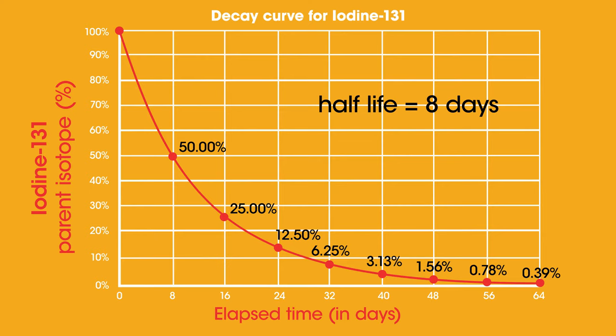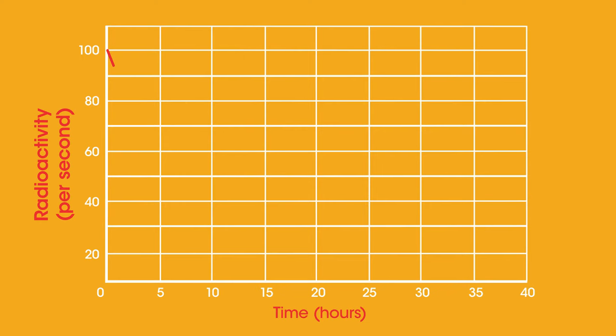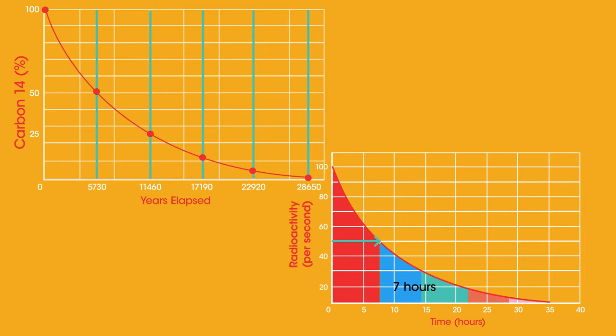Can you work out the half-life of this radioactive isotope? This is the decay curve for carbon-14, which all living things contain. It has a half-life of 5,730 years.